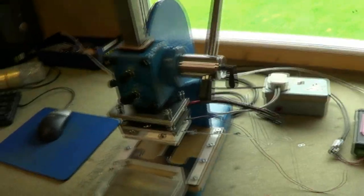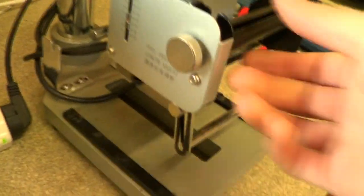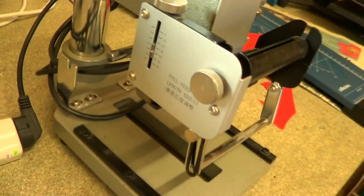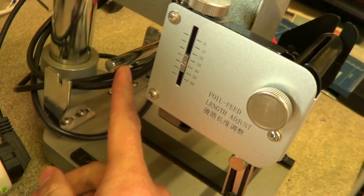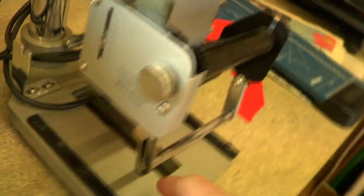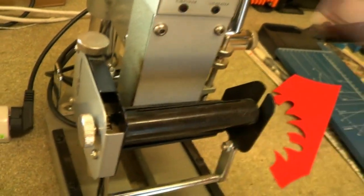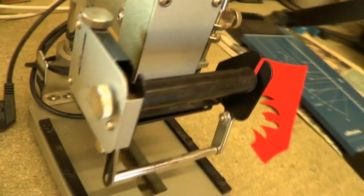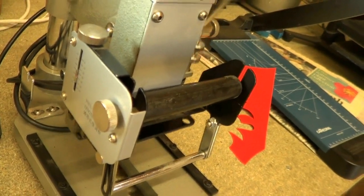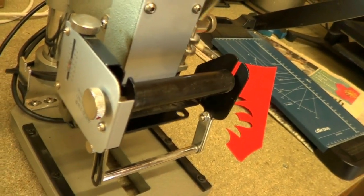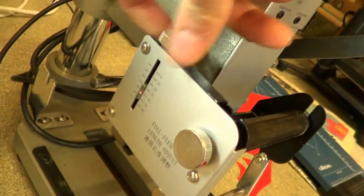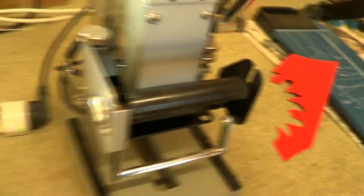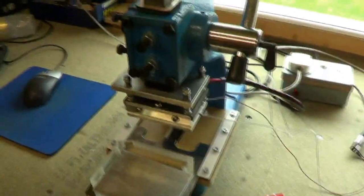One improvement that could still be made to this machine, the old one had an automatic roll feeder. So the full roll goes on the back here, it gets lead along under the die and onto this take-up spool. And every time you cycle the machine, the take-up spool turns a certain amount to feed fresh film through. It's adjustable on the side here. So that would be an improvement. But it's no big deal to cut off pieces of film.